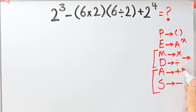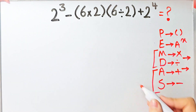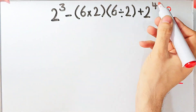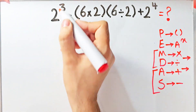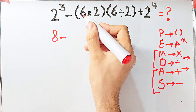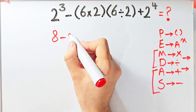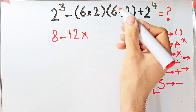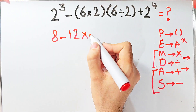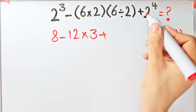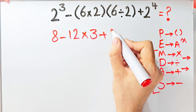In this question, according to the PEMDAS rule, first we simplify the parentheses, then the exponents. Two to the power of three equals eight. Now we have eight minus six times two, which equals twelve, then times six divided by two, which equals three, then plus two to the power of four, which equals sixteen.